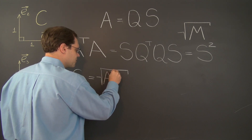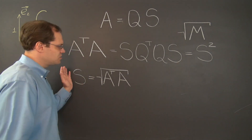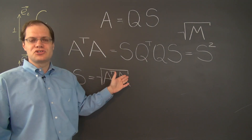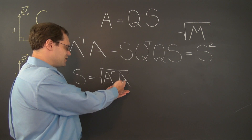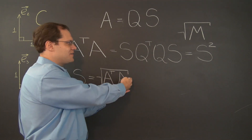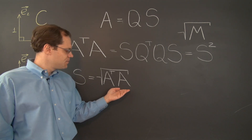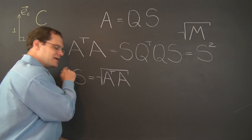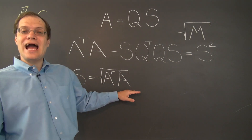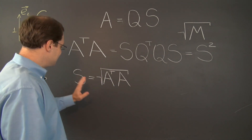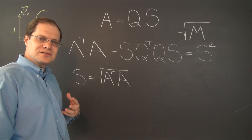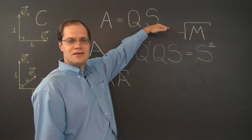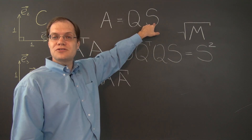Do you see how algebra is carrying us through the entire discussion? This construction really writes itself. We're writing a casual square root, but we have to recall it's actually a laborious construction: you find the eigenvalue decomposition of A transpose A, take the square roots of the eigenvalues in the middle matrix, then multiply back together — and that gives the matrix S. So now we're halfway through: we know S necessarily equals the square root of A transpose A, and we know how to construct it.